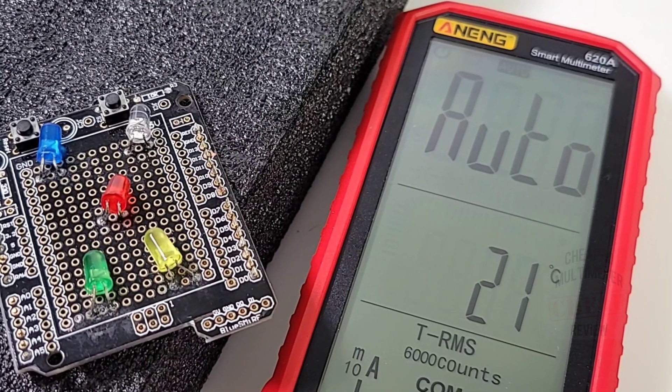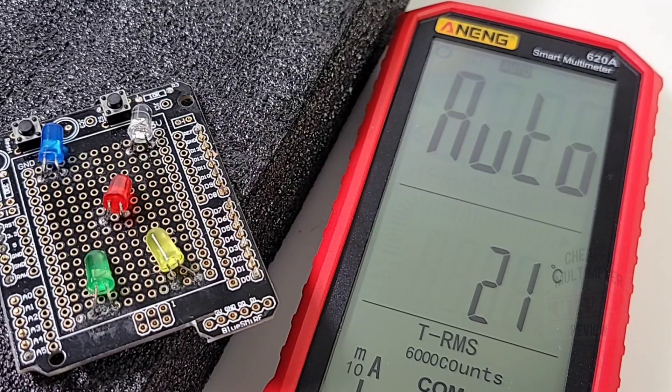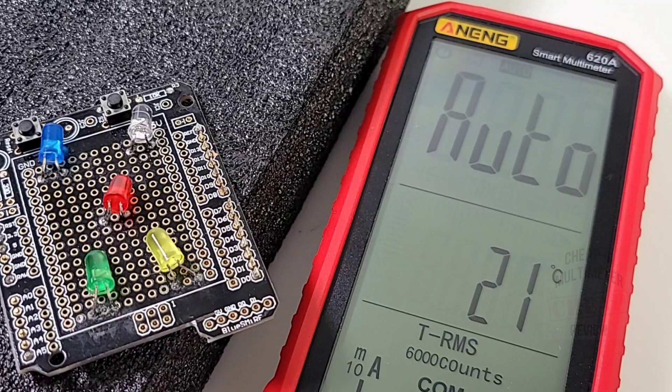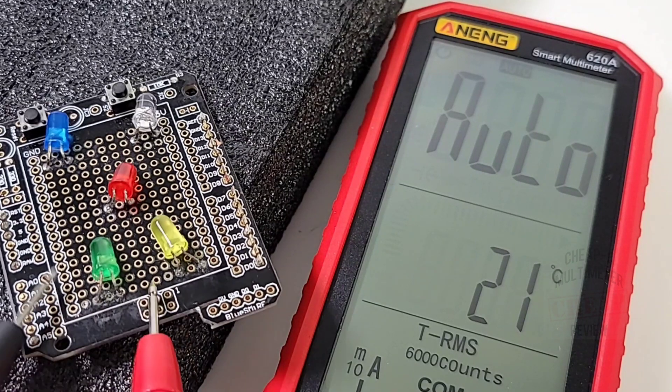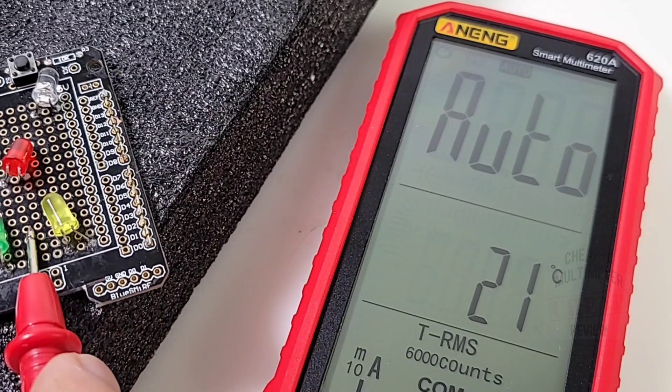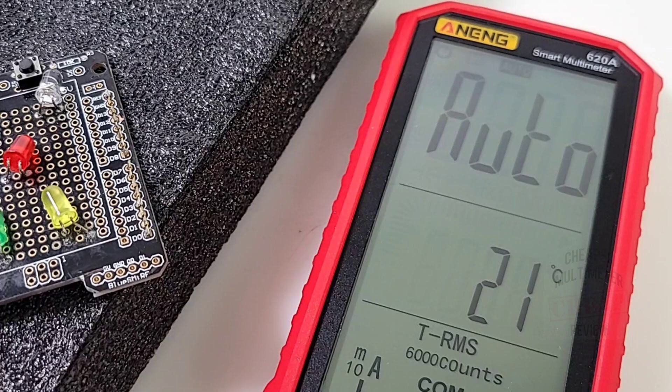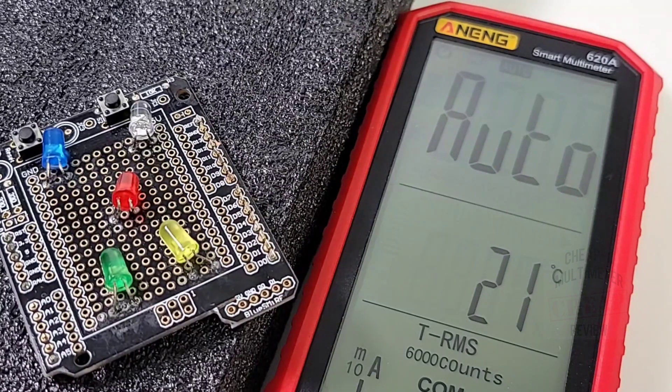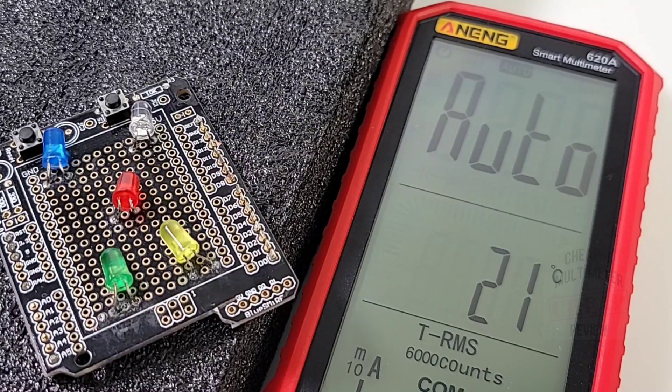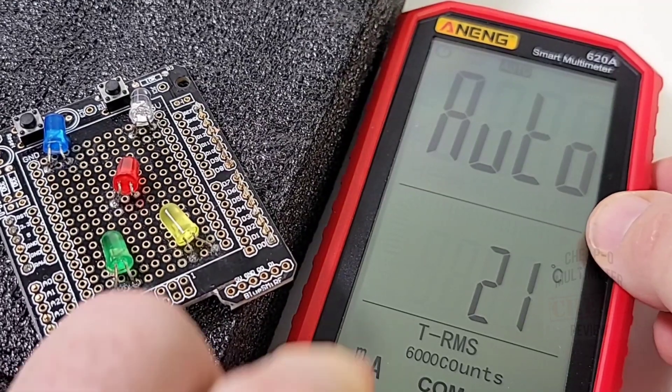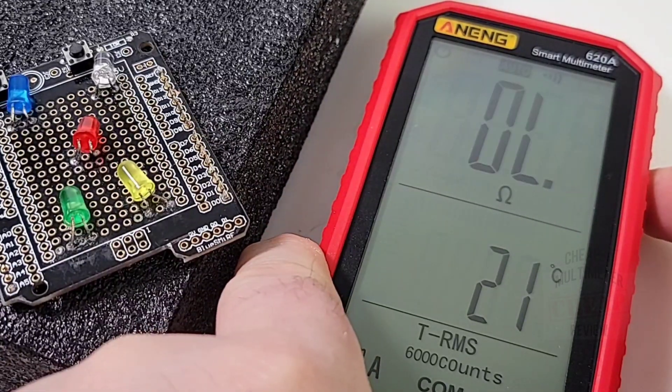Next up are those pesky LEDs, this can cause untold problems on multimeters for some reasons. Here we go, light emitting diode time. Starting off with the green LED, oh it is lit. Oh that's right, we are not in auto mode, my mistake. To do diode we have to switch manually into diode mode, so a couple of clicks here on the side. And we are now in diode mode.